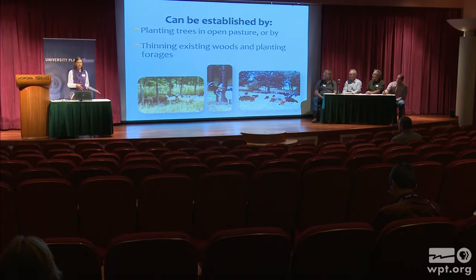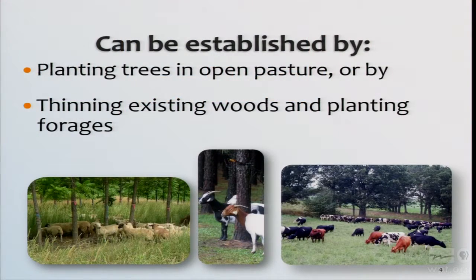Silvopastures can be established in two different ways. They can be done by planting trees in an open existing pasture, or in a blank space in a field where you plant the trees and establish the forage at the same time. The other approach, which tends to be talked about a lot in Wisconsin, is that you can thin existing woods, establish forage in those woods, and then bring livestock in. We also see a lot of silvopasture systems by happenstance — remnant savannas with open-grown trees in a pasture that can be managed as silvopasture.